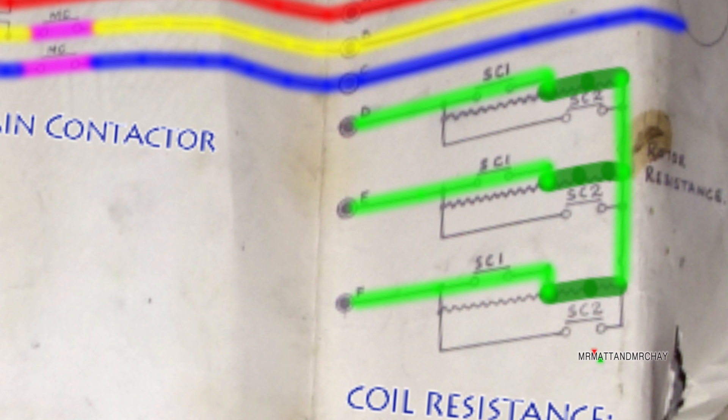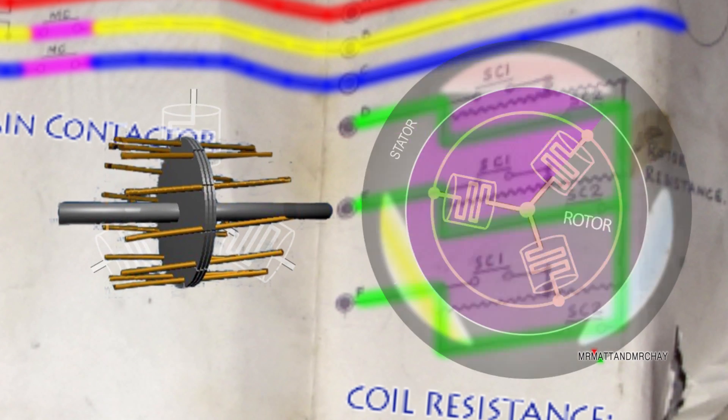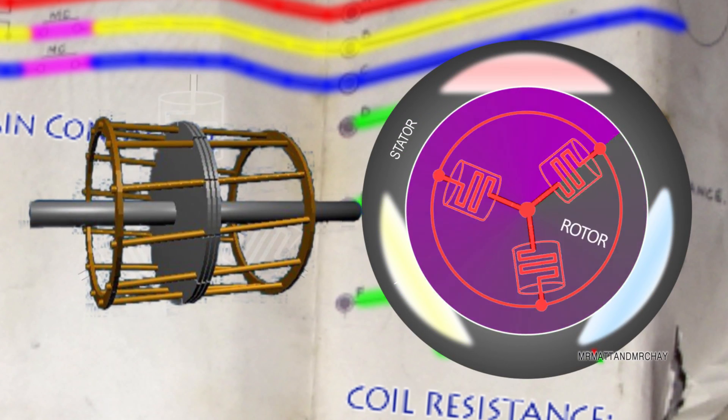One and a half seconds later, SC2 activates, which causes all three resistors to be shorted out. With no resistance at all in the circuit, terminals D, E and F are now connected together to create a conventional caged motor, which is best for normal running.